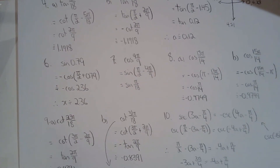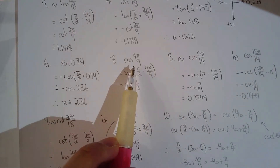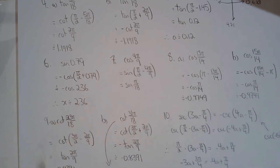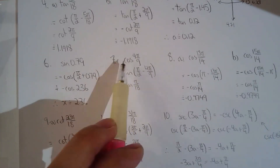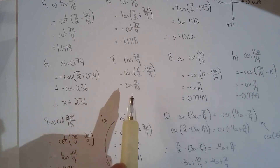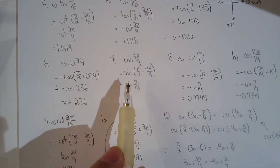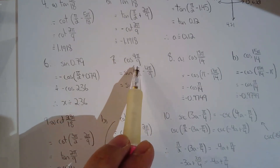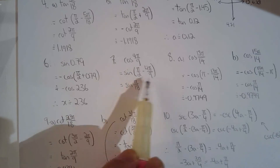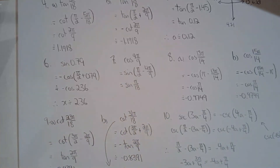Number 7 is a funny question — the cosine key on the calculator isn't working, so we need to convert cos(4π/9) to an equivalent sine expression. Since 4π/9 is in the first quadrant, just find the complementary angle and you're done.